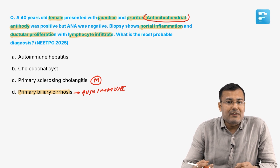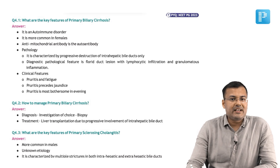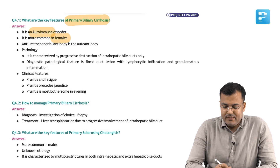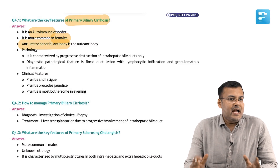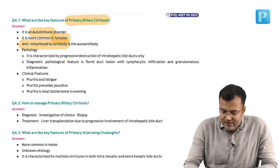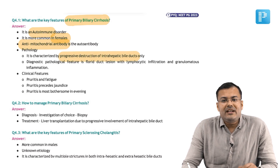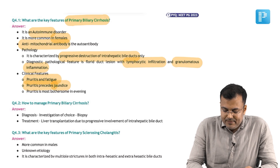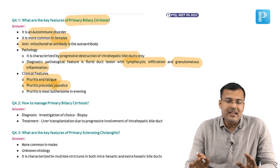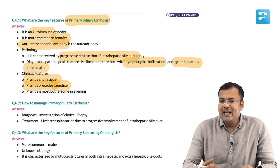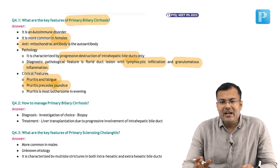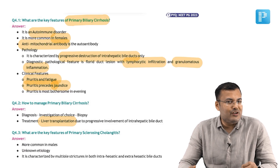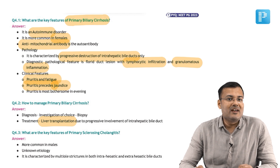This question was taken from NEET PG 2025. See the notes — what are the key features of primary biliary cirrhosis? It is an autoimmune disorder, more common in females, with anti-mitochondrial autoantibody. Pathology shows progressive destruction of intrahepatic bile ducts only, florid duct lesion, lymphocytic infiltration, and granulomatous inflammation. Characteristic features: pruritus, fatigue, and jaundice — pruritus precedes jaundice and is most bothersome in the evening. Investigation of choice is biopsy. Diagnosis can be made by anti-mitochondrial autoantibody. Treatment is liver transplantation.